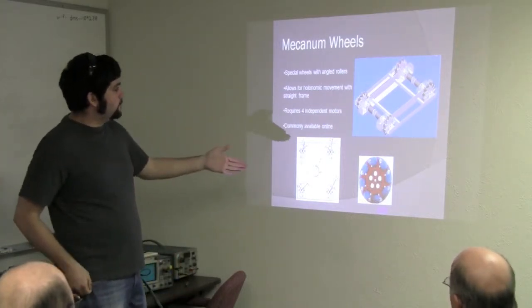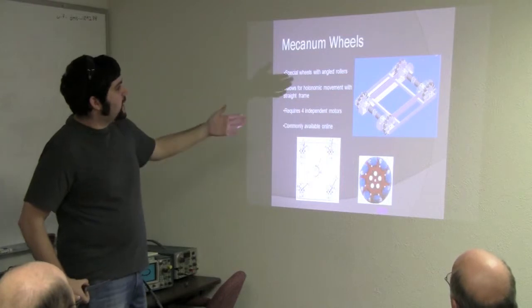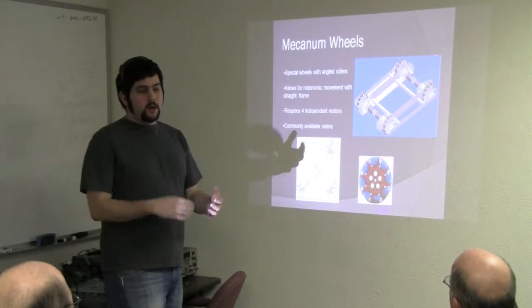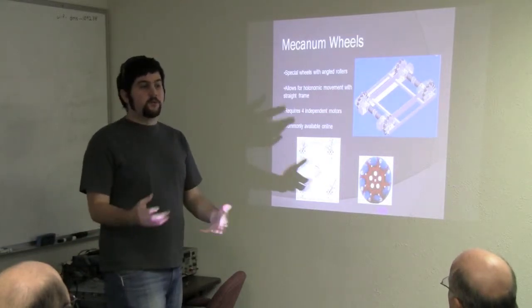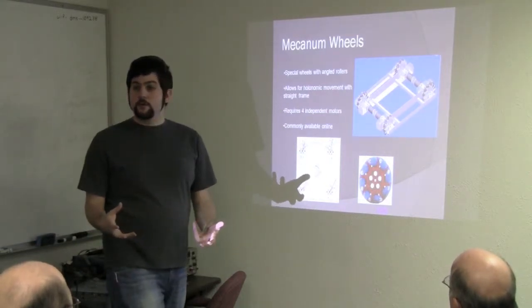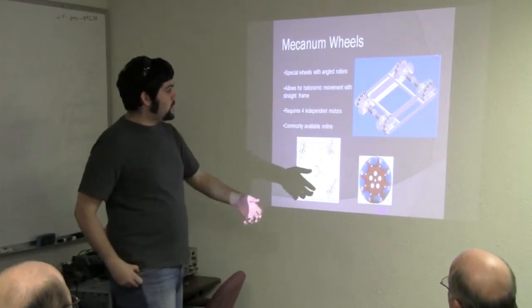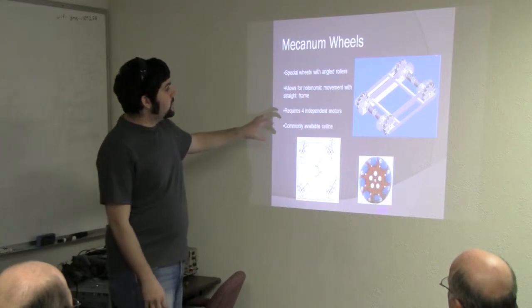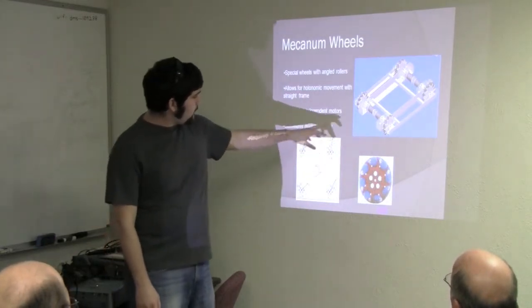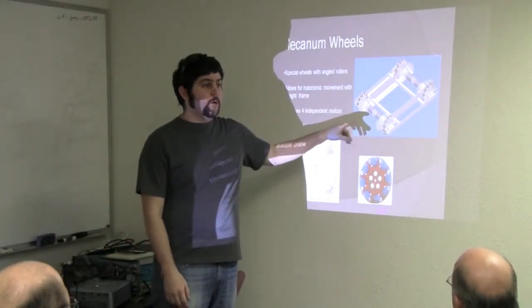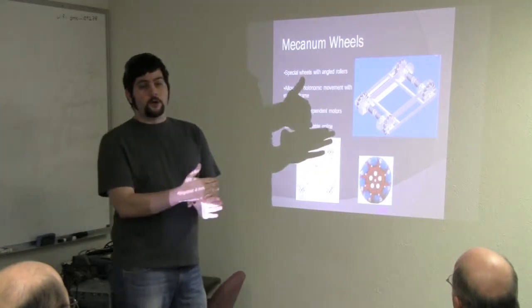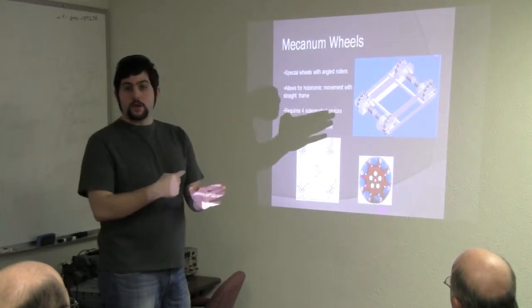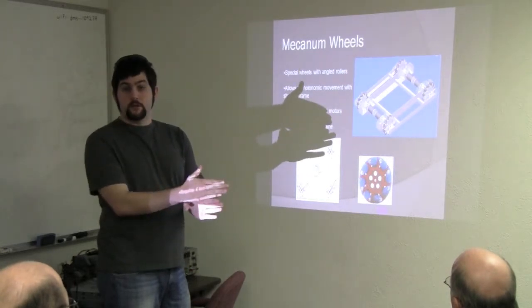So this is what I would say the high end of Omni-directional at this moment is a McKanum wheel. It got famous because a forklift company, Airtracks, started to use them. And now they're being produced by robot companies for use. And a McKanum wheel is a wheel that's similar to an Omni-wheel, except that the rollers are no longer perpendicular to the direction of travel. They're actually at 45 degrees.